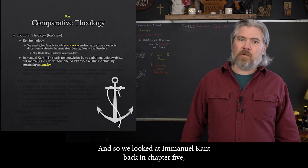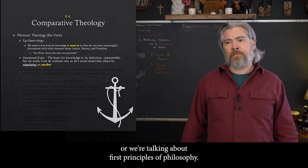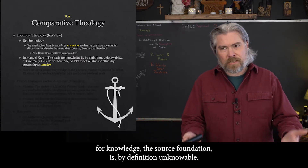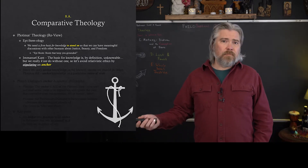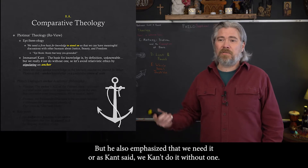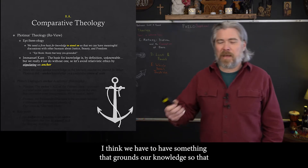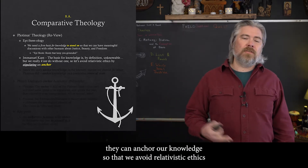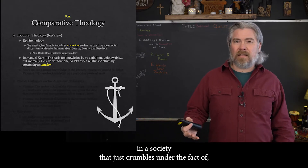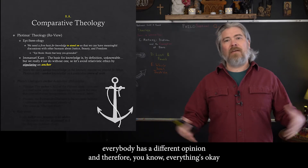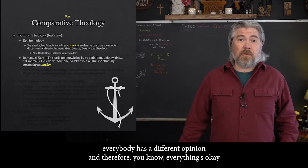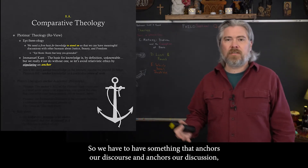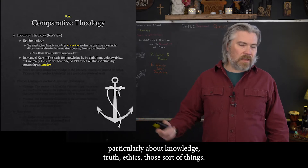We looked at Immanuel Kant in chapter 5, talking about the first principles of philosophy. As Kant pointed out, the basis for knowledge — the foundation — is by definition unknowable. But he also emphasized that we need it. We can't do without one. We have to have something that anchors our knowledge so that we avoid relativistic ethics in a society that just crumbles under the fact that everybody has a different opinion and therefore nothing really matters.